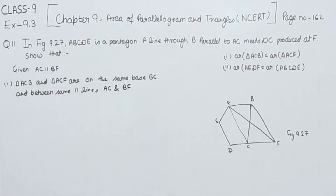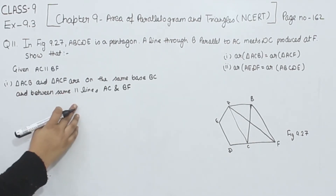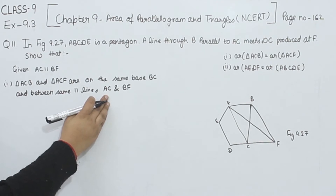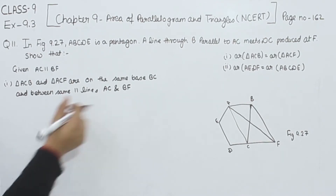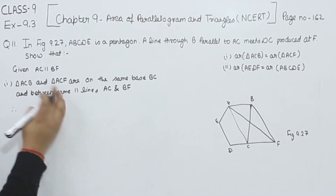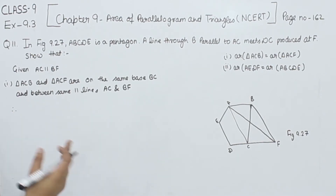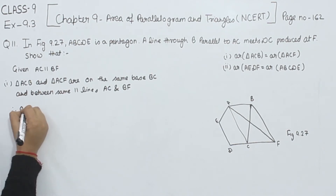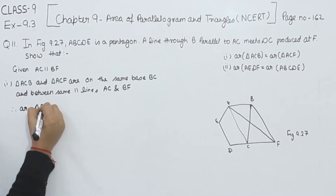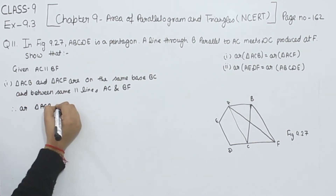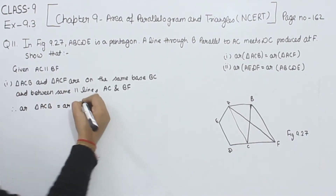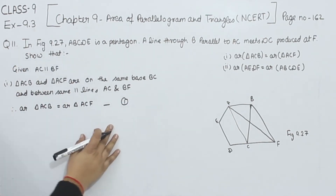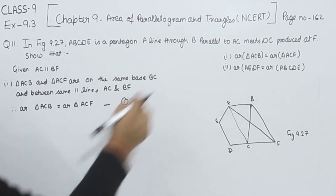These two triangles lie between the same parallel lines AC and BF. Because they have the same base and are between the same parallel lines, the area of triangle ACB is equal to the area of triangle ACF. This is equation number one, and we have proved it.